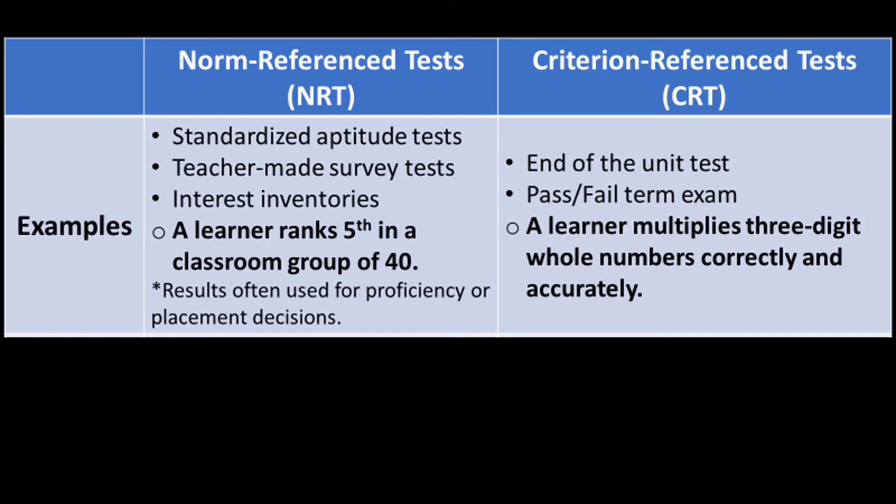Examples of Criterion Reference Tests are End of the Unit Test and Pass or Fail Term Exam. An example of interpreting a result: a learner multiplies three-digit whole numbers correctly and accurately.